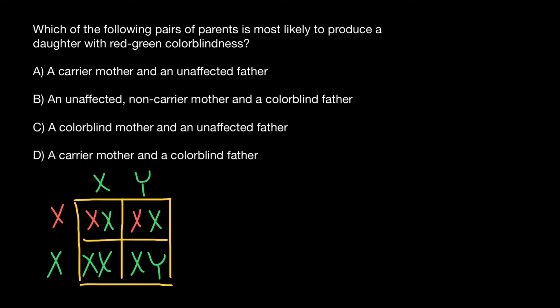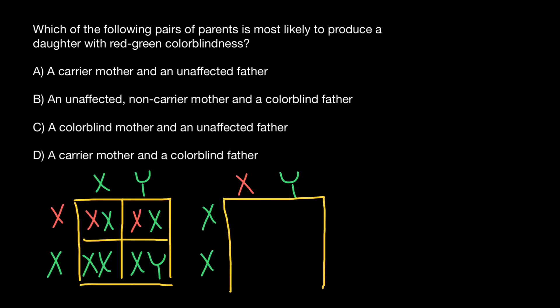Now let's analyze variant B: an unaffected non-carrier mother and a colorblind father. The mother is unaffected and also non-carrier, but the father is going to be affected. Here is the genotype of the father.